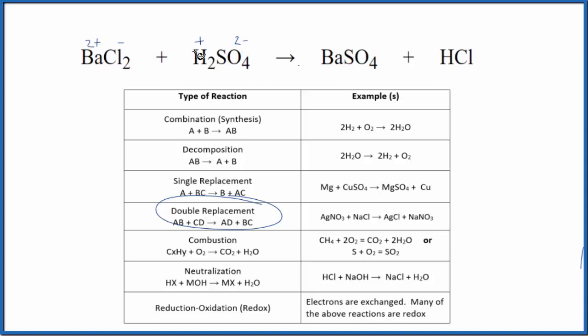So in a double displacement reaction, the positive ions switch places. So the barium's with the chlorine, but it ends up with the sulfate in this barium sulfate. The hydrogen, that's with the sulfate, but it ends up with the chlorine over here in the hydrochloric acid. So that's our double displacement reaction.